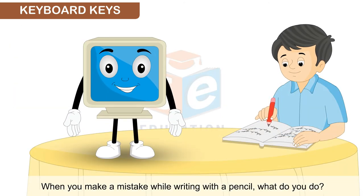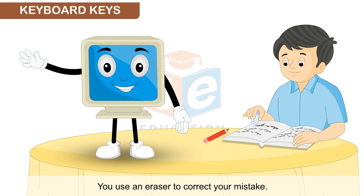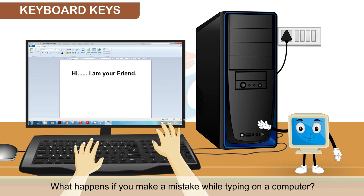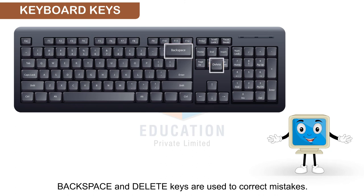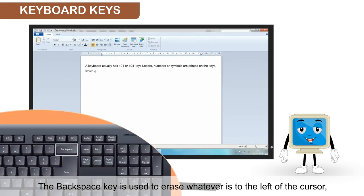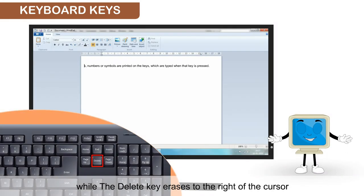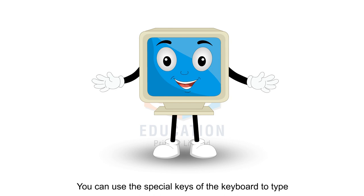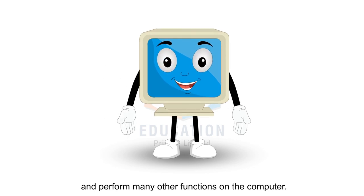When you make a mistake while writing with a pencil, what do you do? You use an eraser to correct your mistake. What happens if you make a mistake while typing on a computer? Backspace and Delete keys are used to correct mistakes. The Backspace key erases whatever is to the left of the cursor, while the Delete key erases to the right of the cursor. You can use the special keys of the keyboard to type and to perform many other functions on the computer.